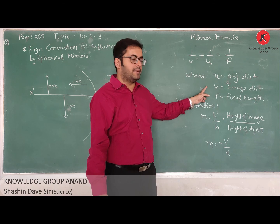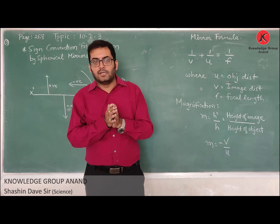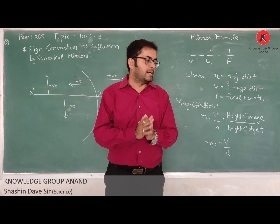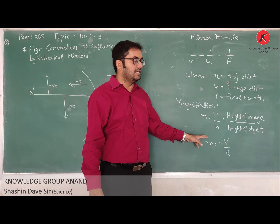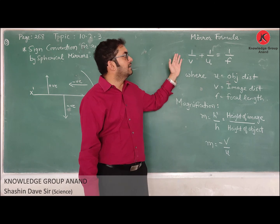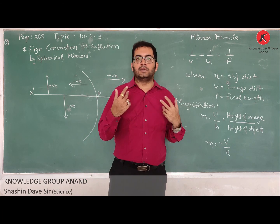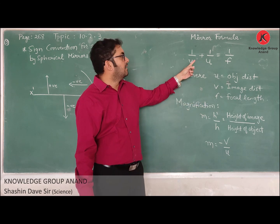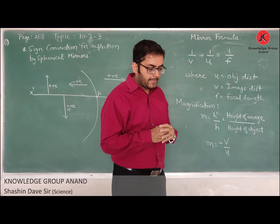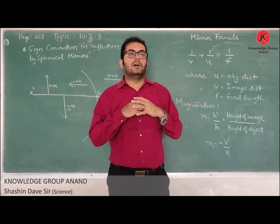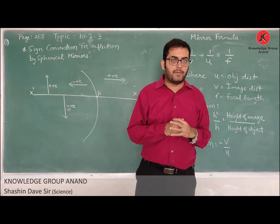Depending on what is given in your question, you can find the magnification using M equals H-dash upon H, or M equals minus V upon U. To find the relationship between object distance, image distance, and focal length, any two values will be given and you find the third using the mirror formula: 1 by V plus 1 by U equals 1 upon F. In the next session, we will solve numericals based on the mirror formula. Bye for now.